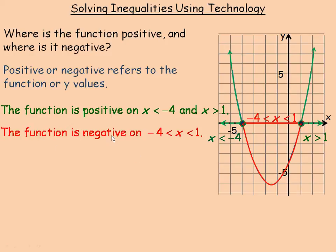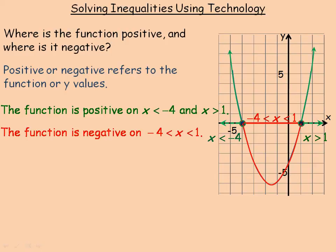The function is negative on the interval between negative four and one, written as negative four is less than x which is less than one, or commonly read as x is between negative four and one. Notice there are no equal signs in any of these because the function is actually equal to zero at negative four and positive one — those points are not included since the function value is zero there, neither negative nor positive.